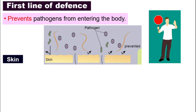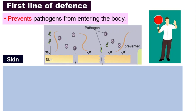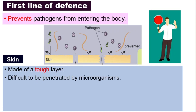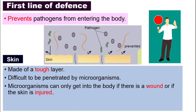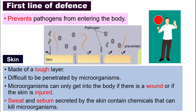The skin does not fight — it actually just prevents the pathogens from entering our body. Our skin is made of a very tough layer and it is very difficult for these pathogens to penetrate. Microorganisms can only get into our body if there is a wound or if our skin is injured. That is why if you have an open wound on your skin, you are always advised to make sure it is clean and properly bandaged, to prevent pathogens from entering through that wound. Also, our skin will secrete sweat and sebum, and these contain chemicals that can actually kill these microorganisms.